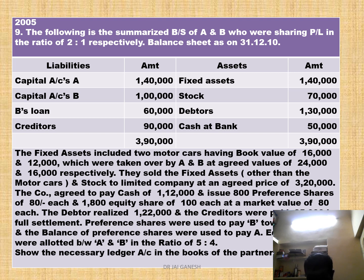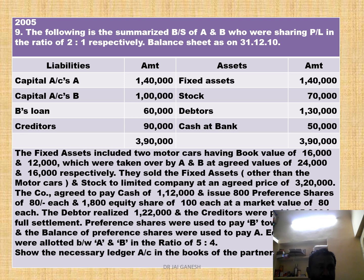Debtors realized Rs. 1,22,000 and creditors were paid Rs. 85,000 in full settlement. Preference shares were used to pay B towards his loan, and the balance of preference shares were used to pay A. Equity shares were allotted between A and B in the ratio of 5 to 4. Show necessary ledger accounts in the books of partnership.